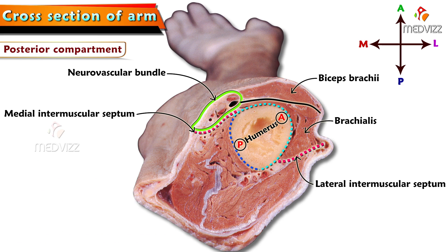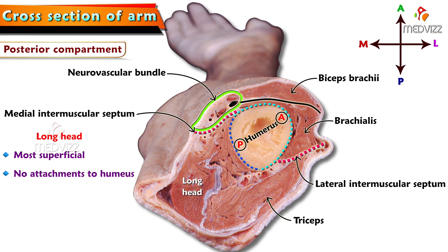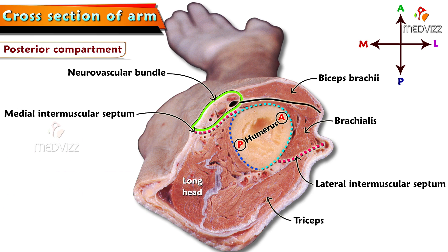In the posterior compartment, the muscle bulk is formed by triceps. It is important to know which is the medial head, lateral head, and the long head of triceps. The long head of triceps is most superficial in the posterior compartment with no attachment with the humerus — it gets origin from the scapula and inserts to the olecranon process of ulna. The lateral head and the muscle adherent to the shaft is the medial head.